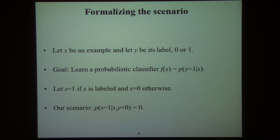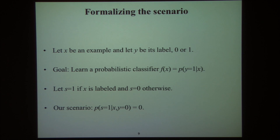It turns out this problem has certainly been addressed in previous research, but hasn't been formalized in the way that we formalize it. We like to think about things probabilistically but elementarily. We have examples — call an example X — and examples have labels: zero means negative, one means positive, where positive means relevant. Almost always we have an unbalanced classification problem, so we think of the positive class as the rare class — but almost always the rare class is the interesting class. Our goal is to learn a probabilistic classifier, a function F, which applied to any example X gives the probability that X is positive: probability of Y equals 1 given X.